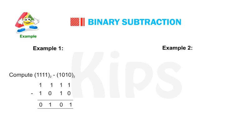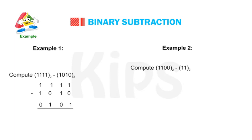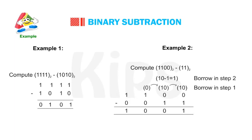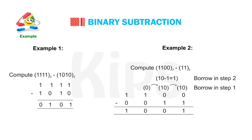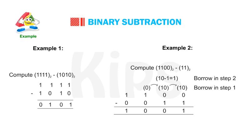Example 2: Compute binary 1100 minus binary 11. Subtracting binary 11 from binary 1100, we get 1 with borrow, 0 with a borrow, 0, and 1 — giving us the result 1001.